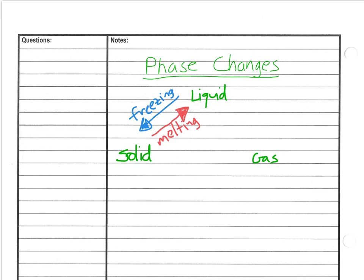So, if we want to go from a liquid to a gas, we call that evaporation. And if we go the other way, from a gas to a liquid, we call that condensation.